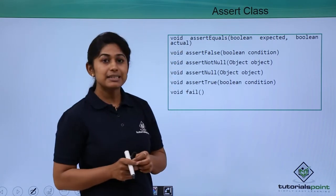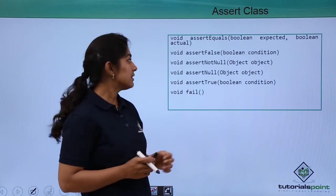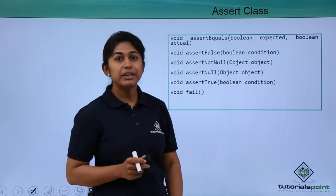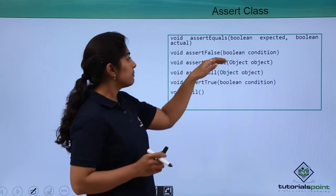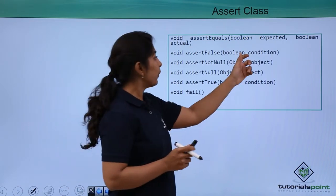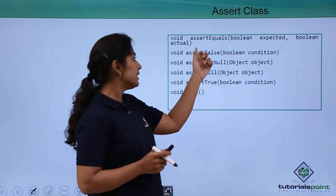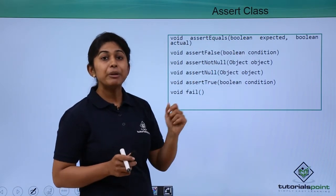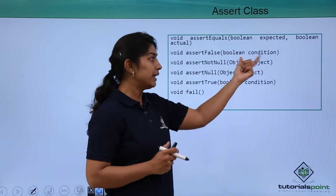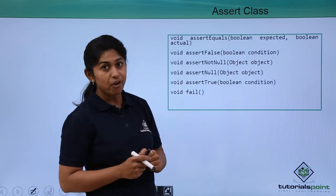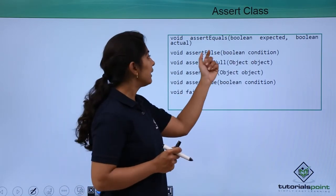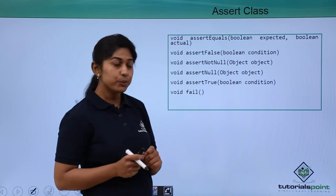The next method is assertFalse, in which we provide a boolean condition. This method checks whether the provided condition is false or not. It will run successfully if the provided condition is false, and it will throw an error if the provided condition is true.